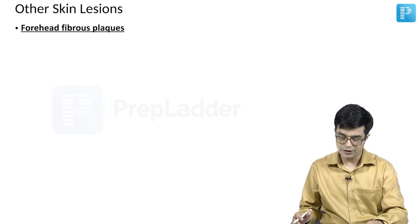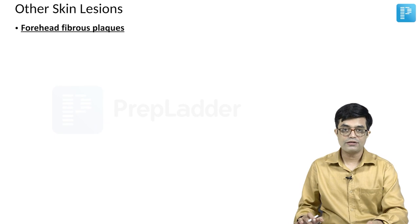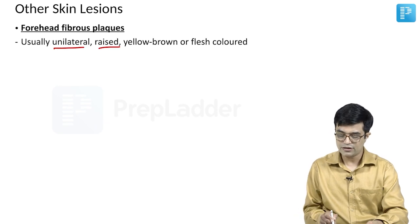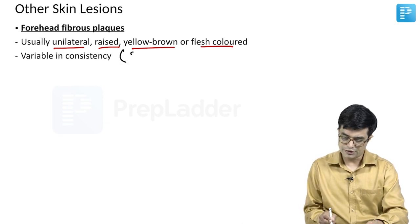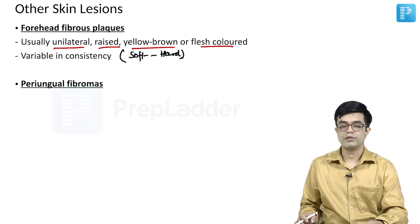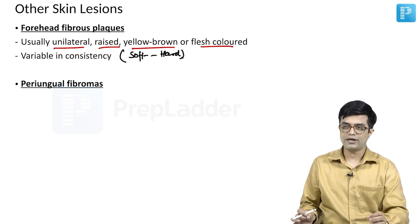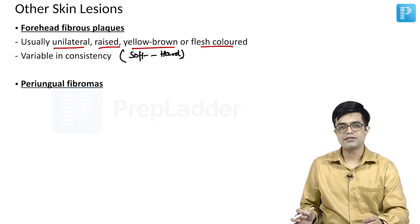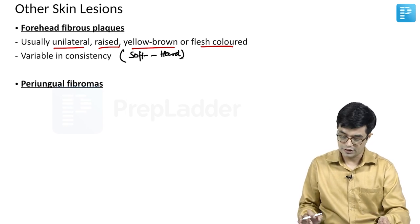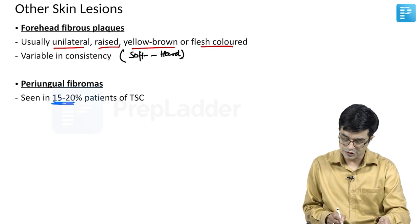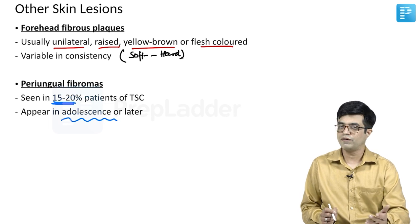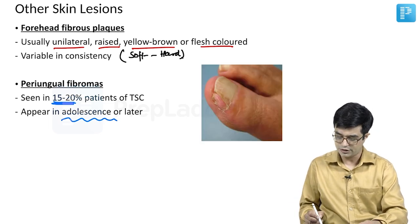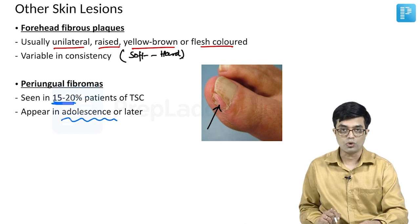Other skin lesions include forehead fibrous plaques, which are usually unilateral, raised, either yellow-brown or flesh-colored, and variable in consistency from very soft to hard. Periungual fibromas may form around or along the nail bed, sometimes causing nail destruction or nail hematomas. These are seen in about 15 to 20 percent of patients and appear in adolescence or later in life — they are not found in young children.